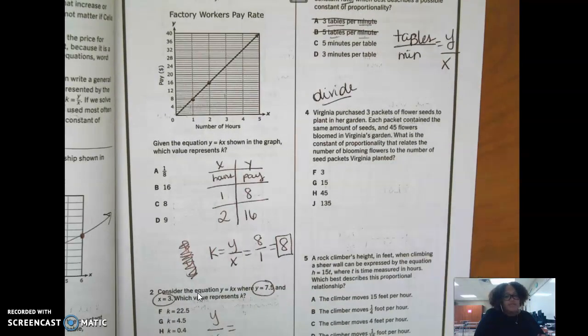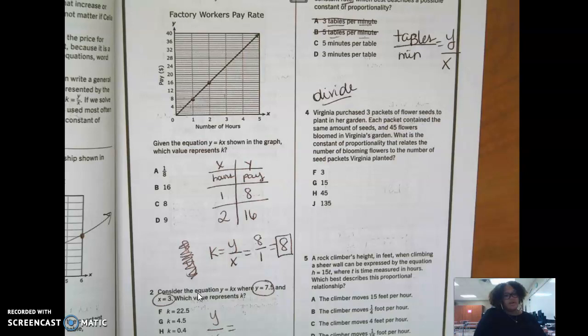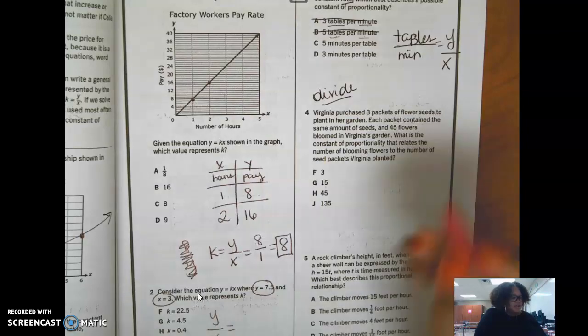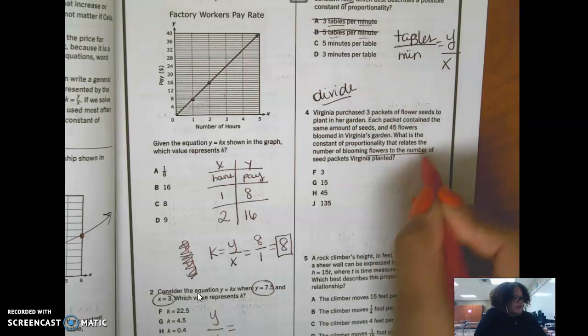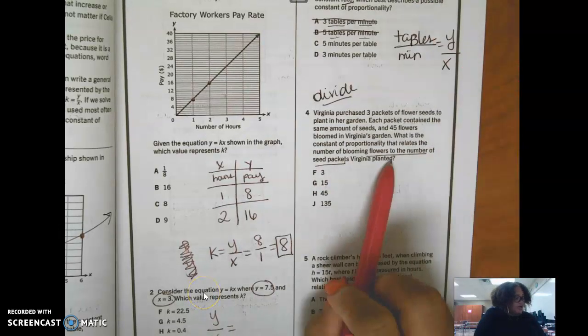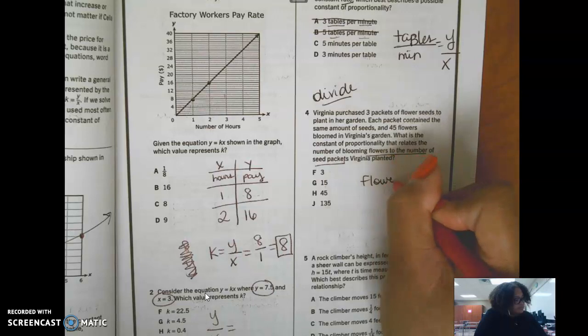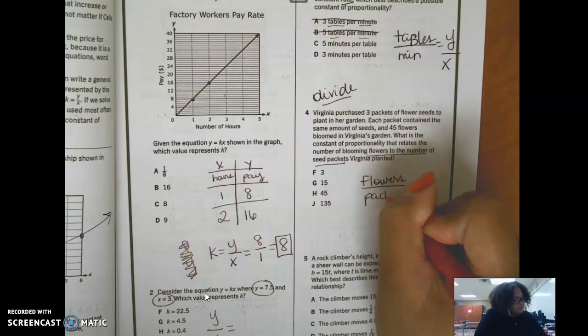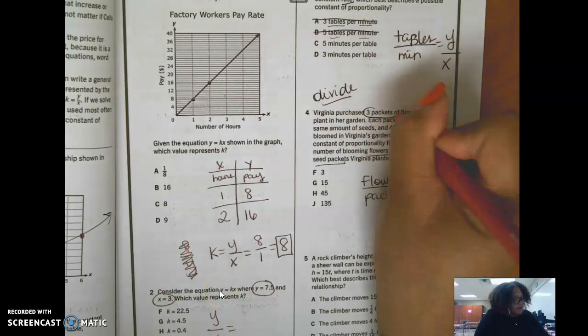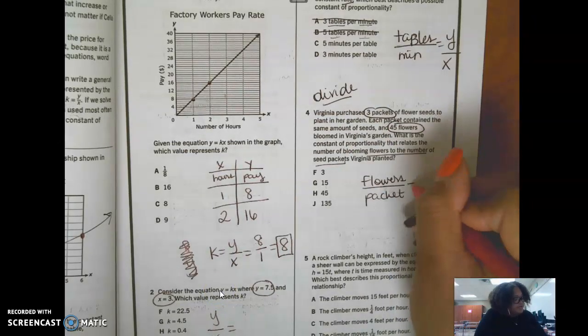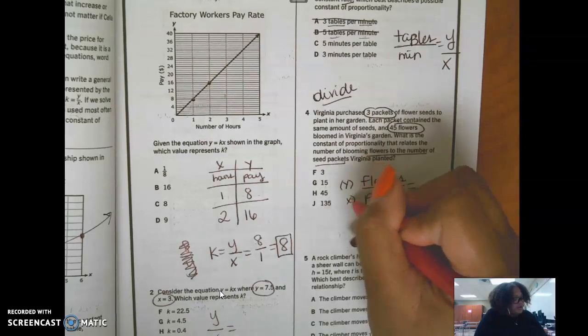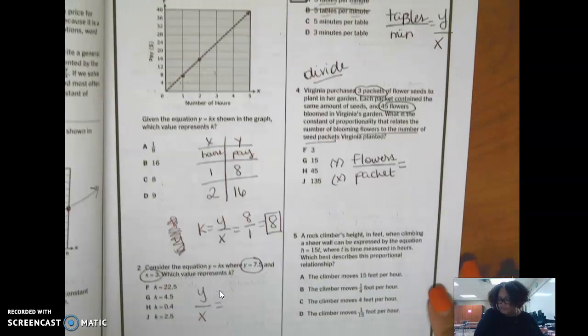Number four. Virginia purchased three packets of flower seeds to plant in her garden. Each packet contained the same amount of seeds, and 45 flowers bloomed in Virginia's garden. What is the constant of proportionality that relates the number of blooming flowers to the number of seed packets planted? So remember we read ratios left to right in this case. Flowers per packet. Three packets, 45 flowers, and this is my y over x. Divide here.